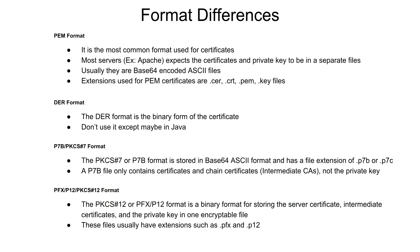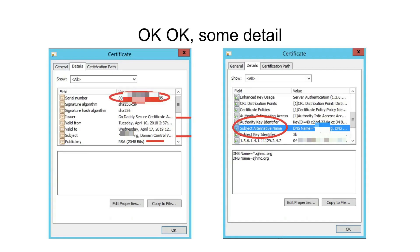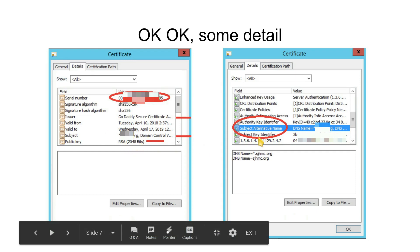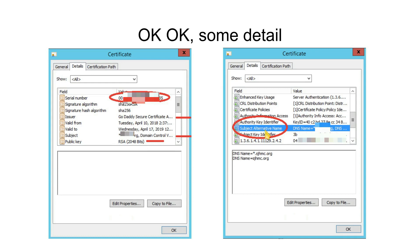This is some detail about the actual certificate itself — a screenshot of a certificate opened on a Windows machine. You've got your serial number, valid from date, subject, and public key on the left. On the right you have what's called a Subject Alternative Name — we talked about that earlier. Instead of having banking.bankofamerica.com and electronicbanking.bankofamerica.com as separate certificates, you can add alternative names to have one certificate cover many different websites.